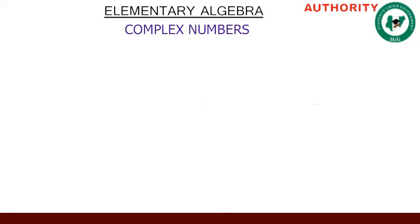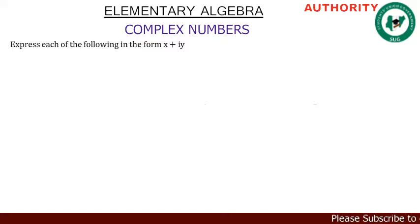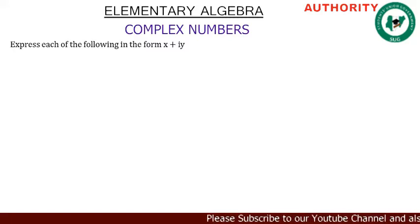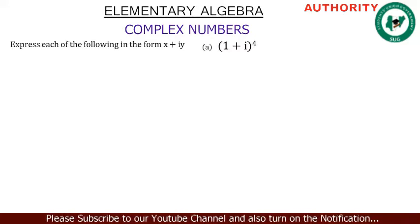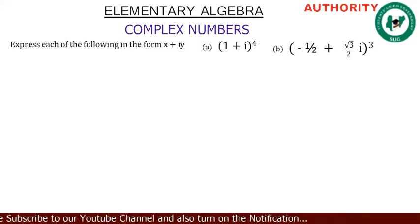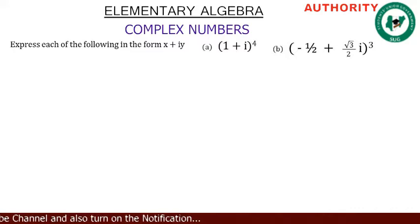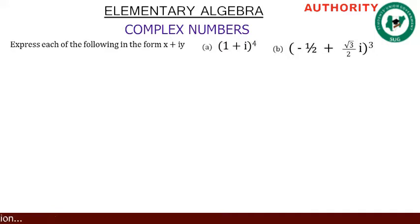Alright, you are welcome again. We are treating complex numbers. Let's take this question: express each of the following in the form of x plus iy. Part A: we have (1 + i) raised to power 4. Part B: minus one-half plus square root of 3 over 2i, all in bracket raised to power 3. We are asked to express A and B in the form of x plus iy.